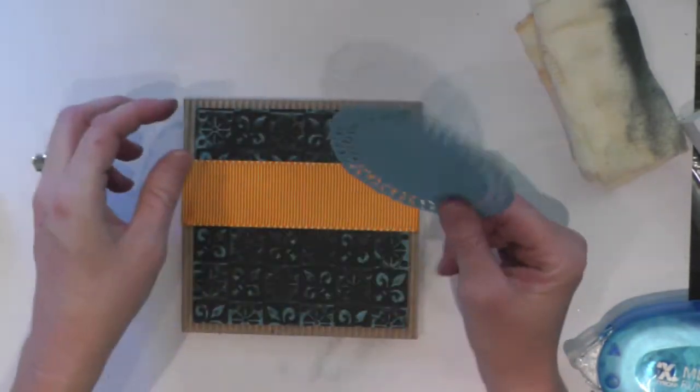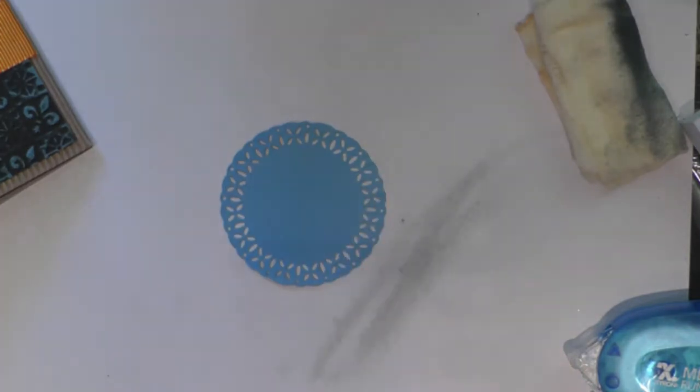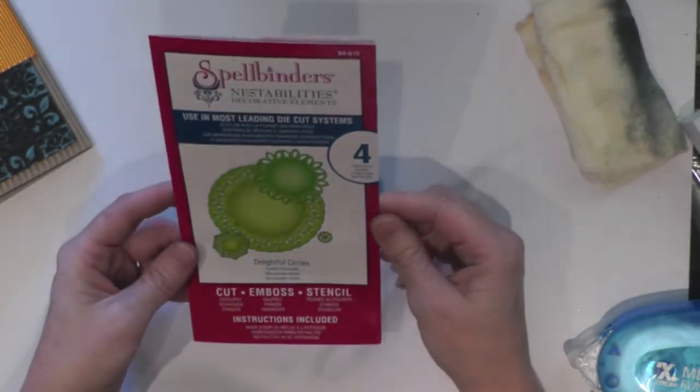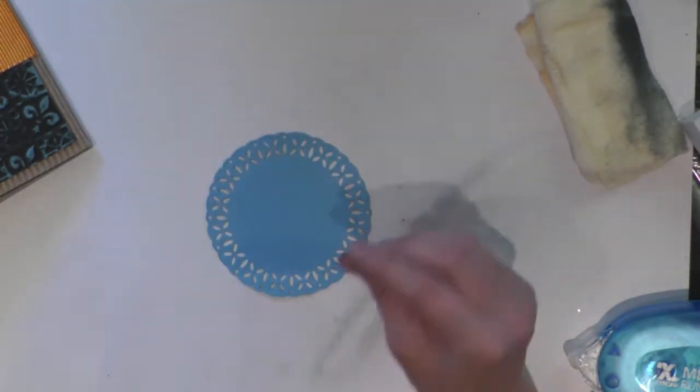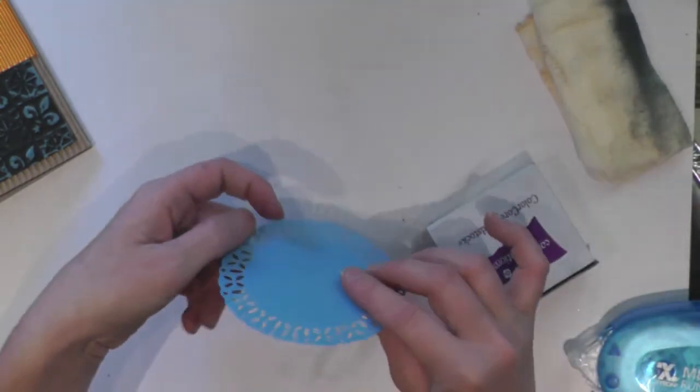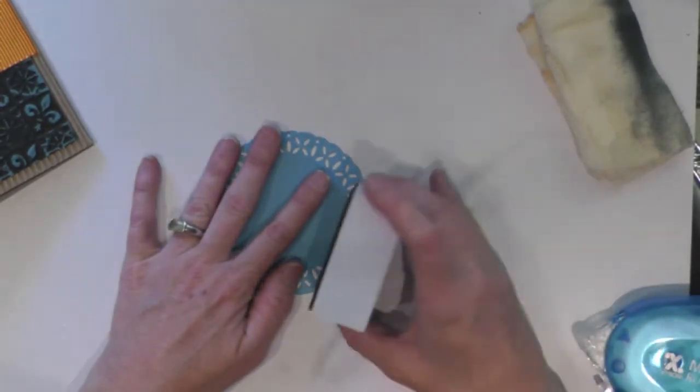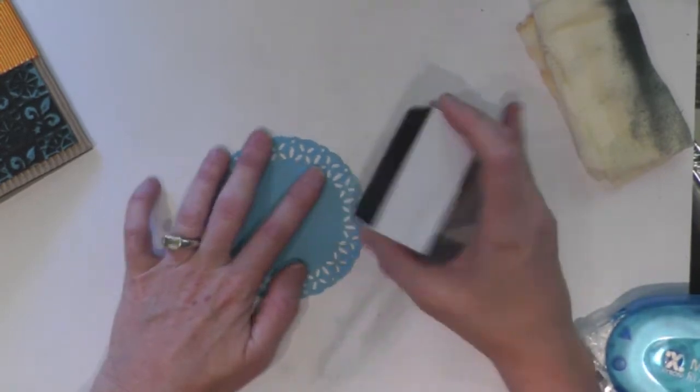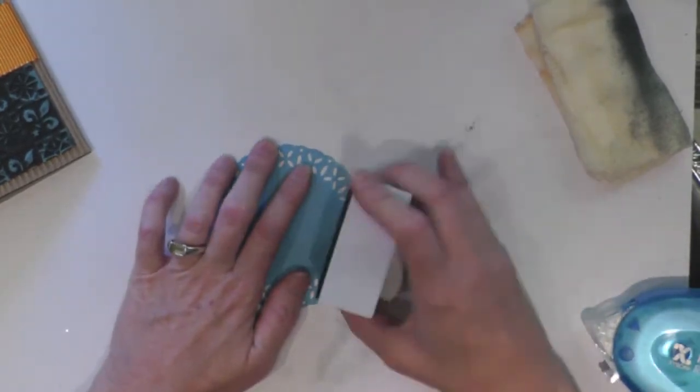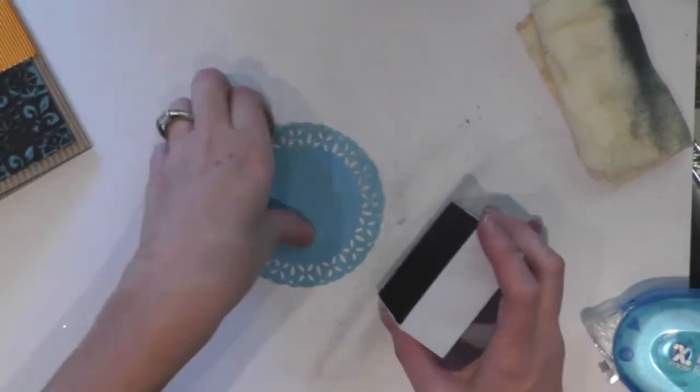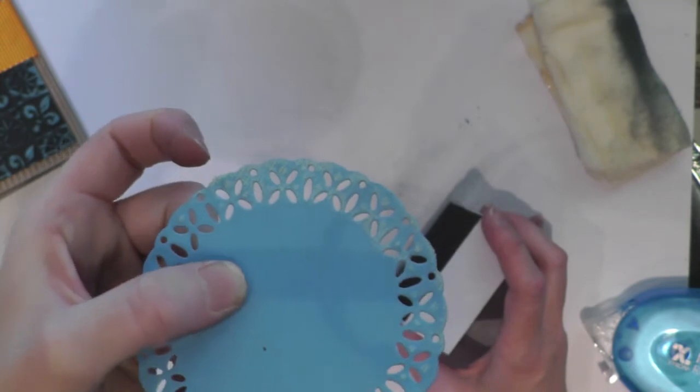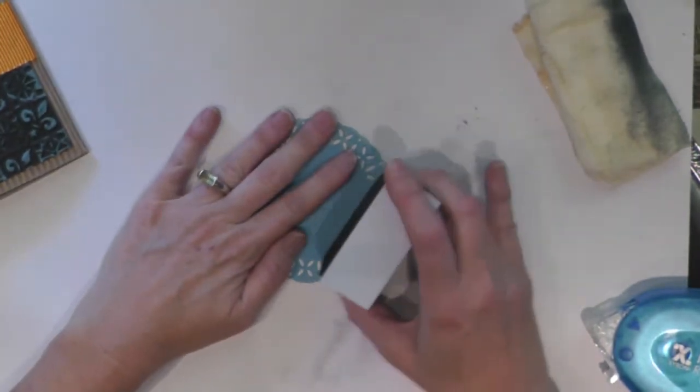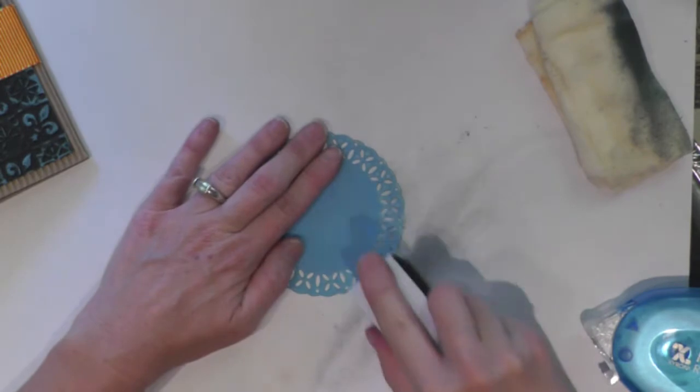So now, this is also a piece of Coordinations. For this die cut, I used the Spellbinders Nest Abilities. This is the Delightful Circles and I cut this one out. This one has a white core, as opposed to the Black Magic. So when I sand on this one, you can see it's exposing white. Can you see that? There we go.